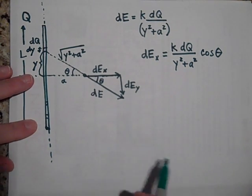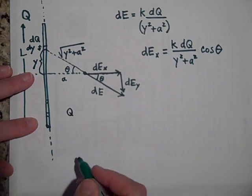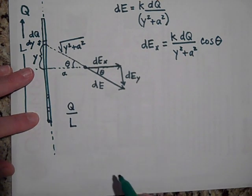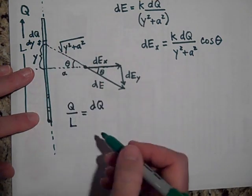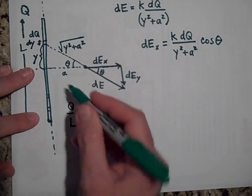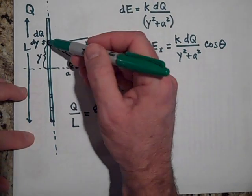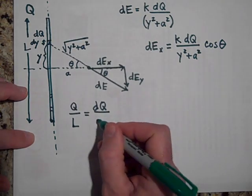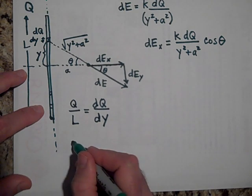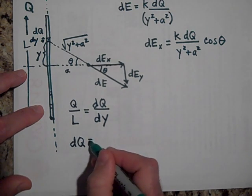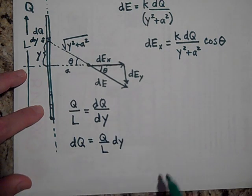Let's try and put the dQ in terms of dy. To get the dQ in terms of dy, I'm going to say Q is to L total length as dQ is to the little length of dQ. Q is spread out over L, but dQ is spread out over dy. So it turns out that dQ is equal to Q over L times dy, so I can put that in for that.